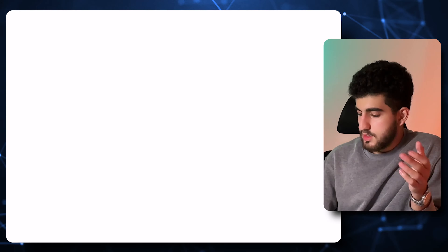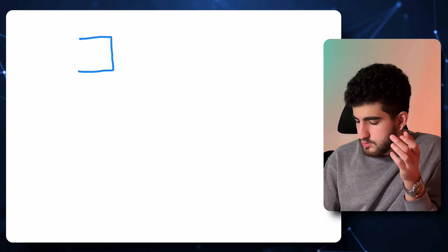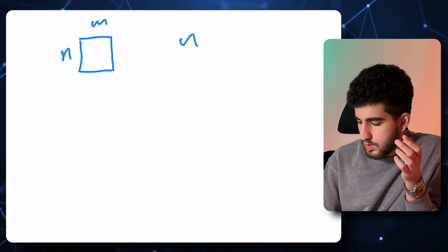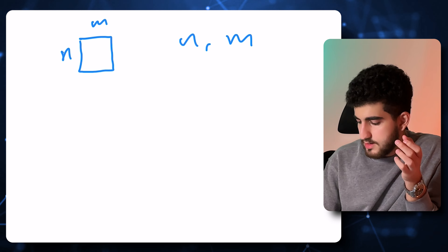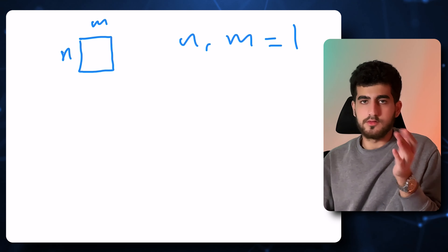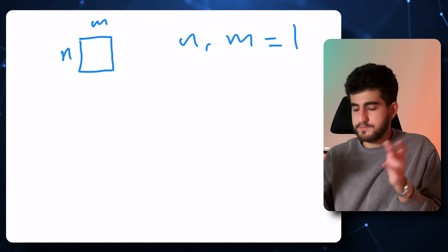Problem A. In this problem, first of all, I can say that if the values of n and m are both equal to 1, then there's definitely nothing we can do. That only cell should be 1.